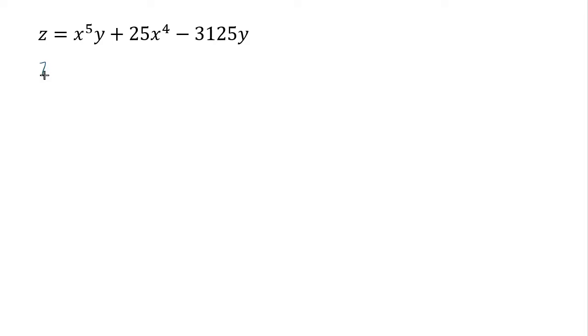So you have to differentiate by x, which means you're treating y as a constant. So it's 5x to the 4th times y. 4 times 25, that's 100 x to the 3rd. And y is considered as a constant, so that's going to go away when you differentiate by x.